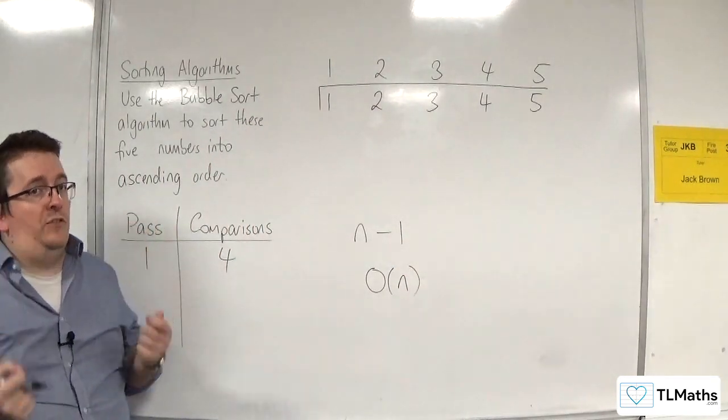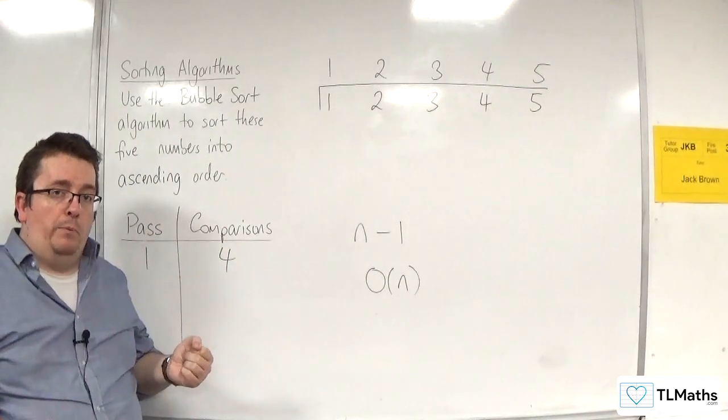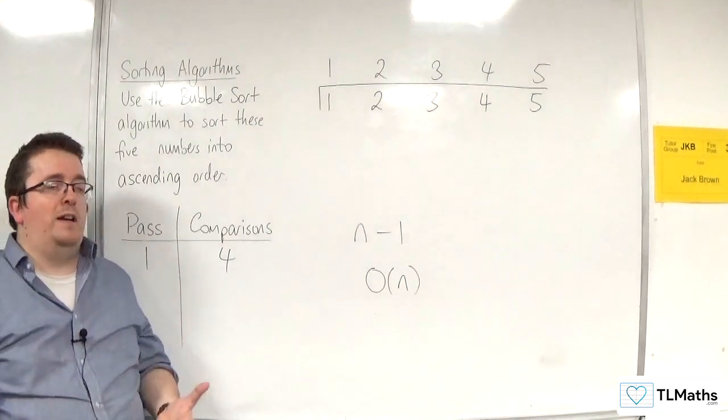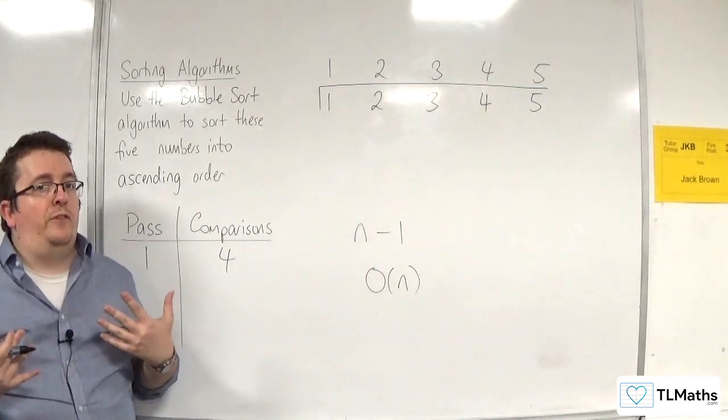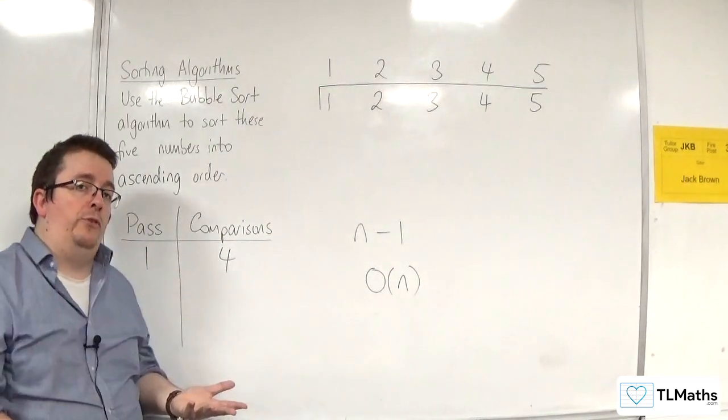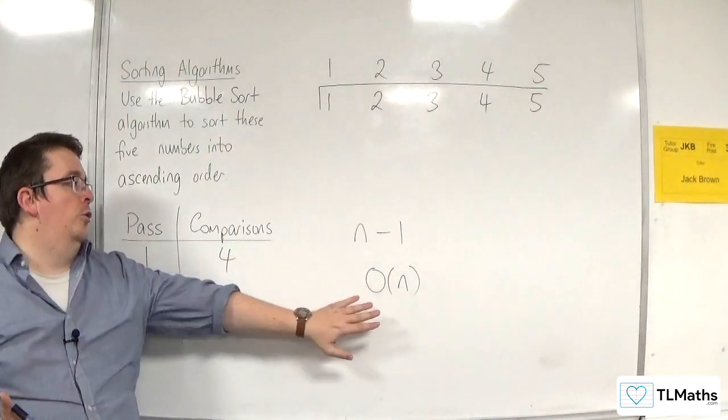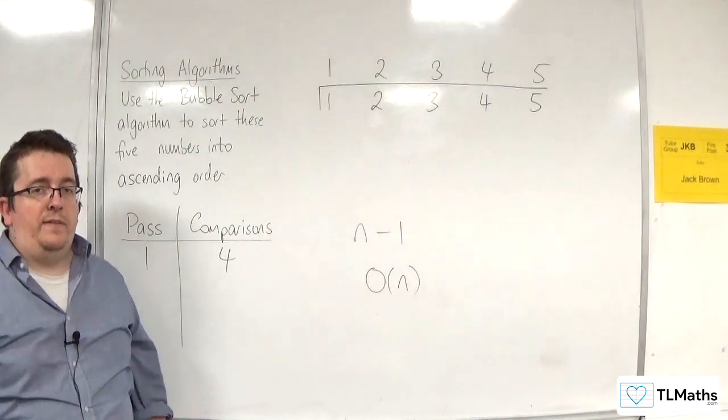So the best case scenario for bubble sort is if the numbers are already in the correct order. For quick sort, it wasn't too good. In fact, it was worst case scenario for quick sort. But for bubble sort, it's the best case scenario, and the algorithm has order of complexity of just n, so linear complexity in that case.